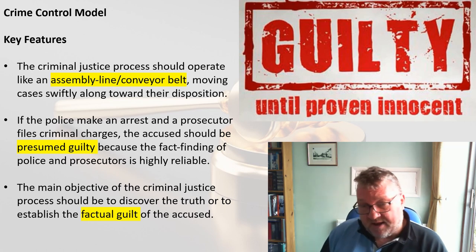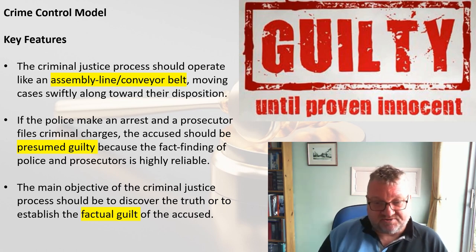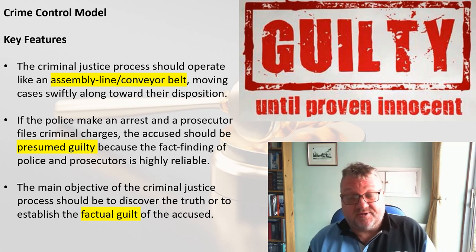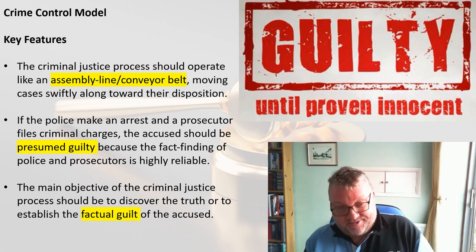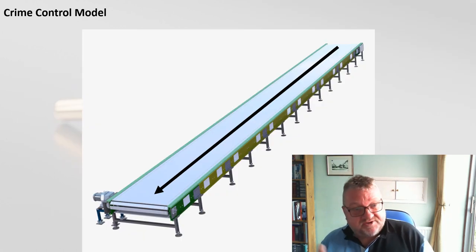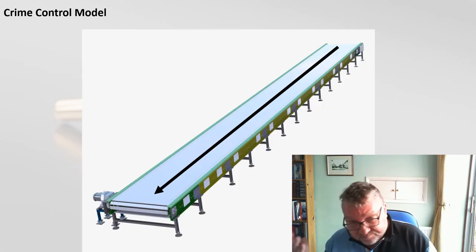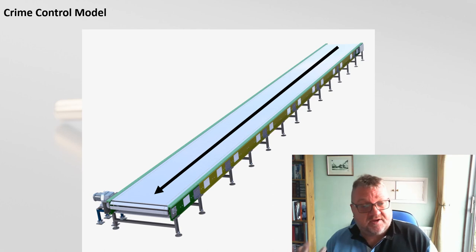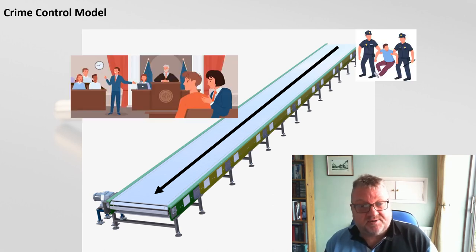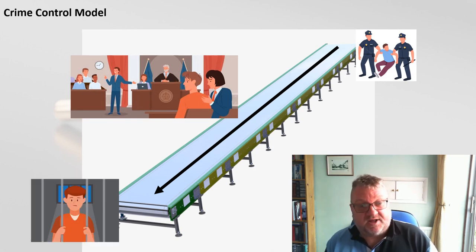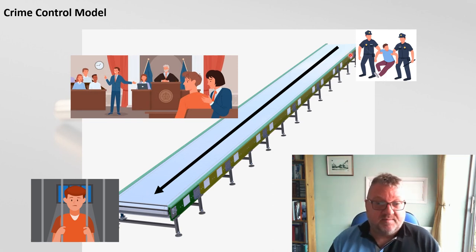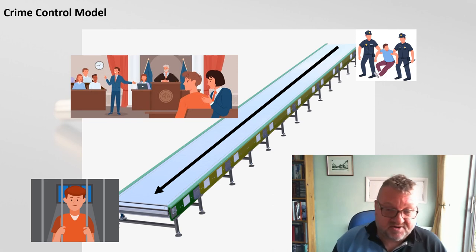Factual guilt simply means the person did it. Under the crime control model, you arrest the person, get them up in court as soon as possible, and get them behind bars as soon as possible. It's a straight, easy process that's quick and efficient — that is the crime control model.